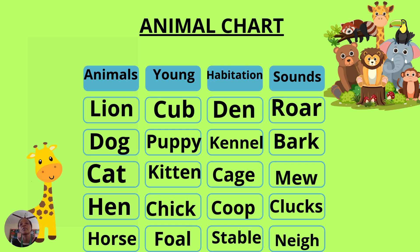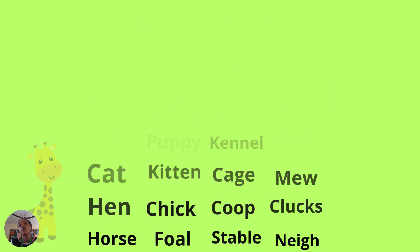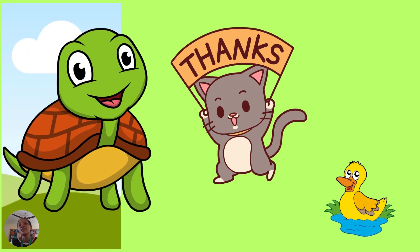For a hen, the baby is called a chick and the hen lives in a coop and it makes the sound cluck. The final animal for today is a horse. The baby of a horse is called a foal, and a horse lives in a stable. A stable is like a built house mostly made with wood, for a horse to live in.